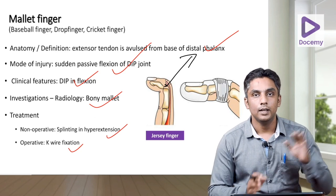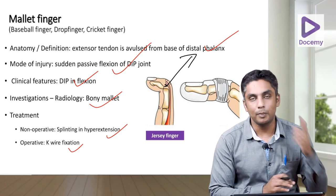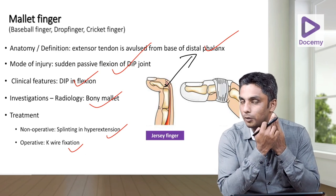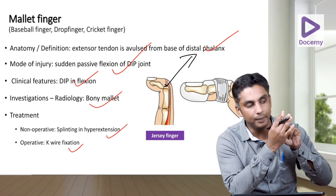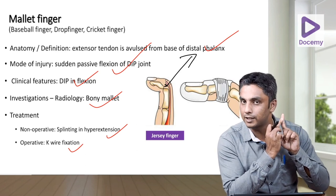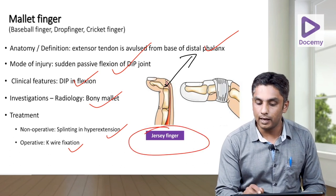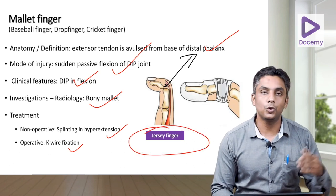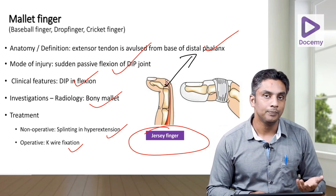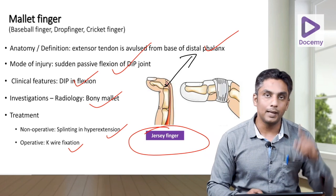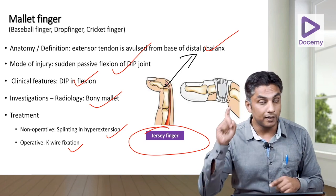Just the opposite of mallet finger is Jersey finger. Mallet finger is the extensor digitorum insertion avulsed from the base of the distal phalanx. Now if the flexor digitorum profundus (FDP) gets avulsed from the distal phalanx base, it is your Jersey finger — the opposite of mallet. Mallet is for extensor tendon rupture whereas Jersey finger is for flexor tendon rupture.